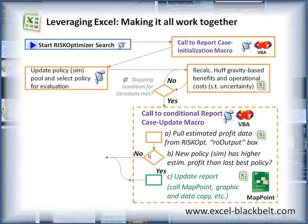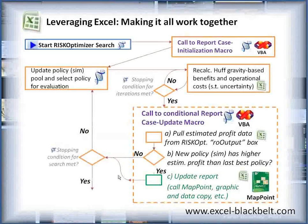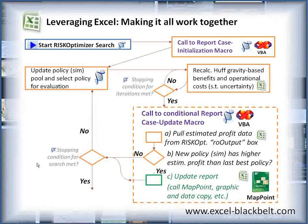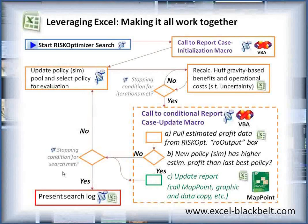So the flowchart depiction is essentially what's happening upon each policy consideration. As part of the simulation optimization, we'll be going through a search until the stopping conditions of the search are met. And finally, the final presentation log is presented.